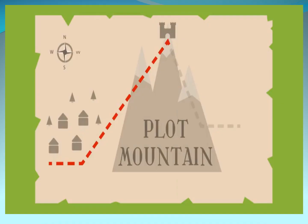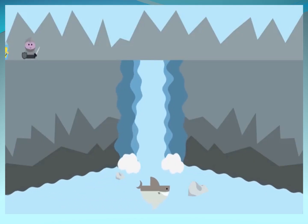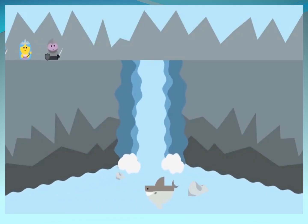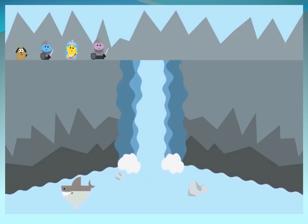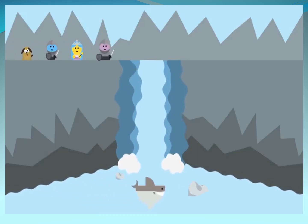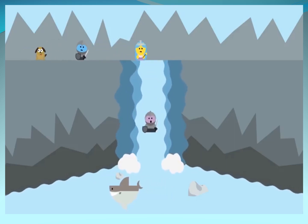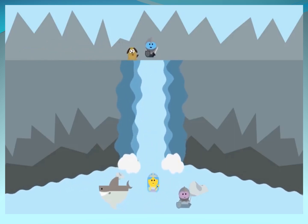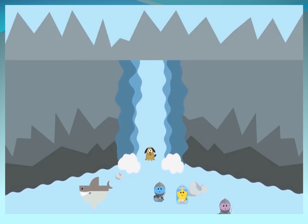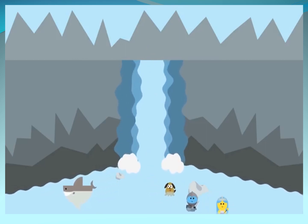After the top of Plot Mountain, you're going to start to go down. We call this the Falling Action, and it lasts until flat ground. There's still action in the story, but it will start to slow down. The worst is over. There are still some problems — how long will they last? And don't forget, the ending is coming fast, all the way down Plot Mountain.